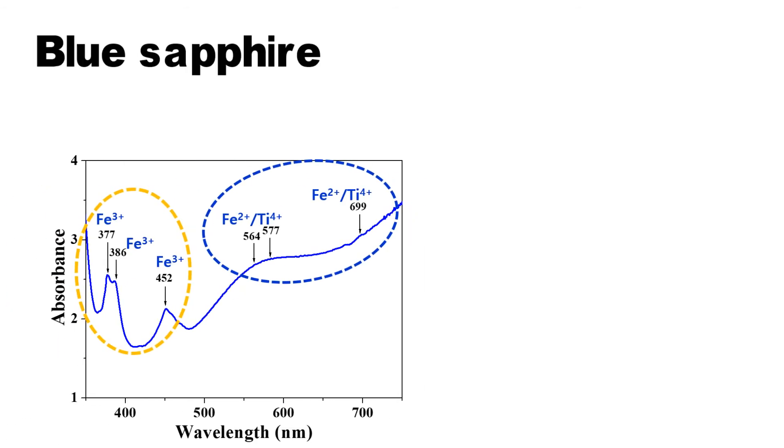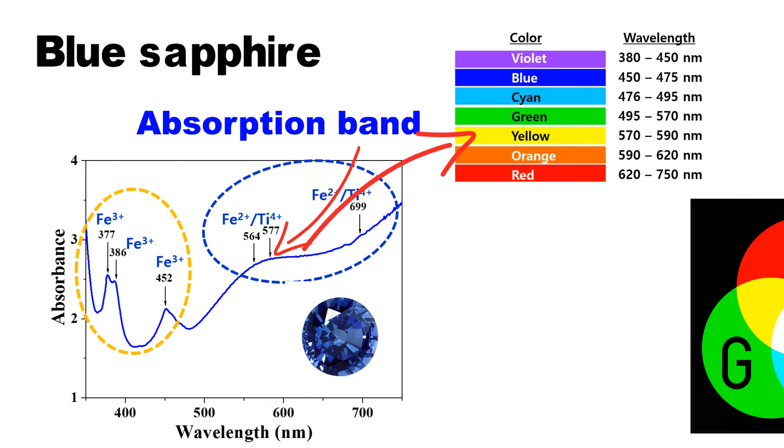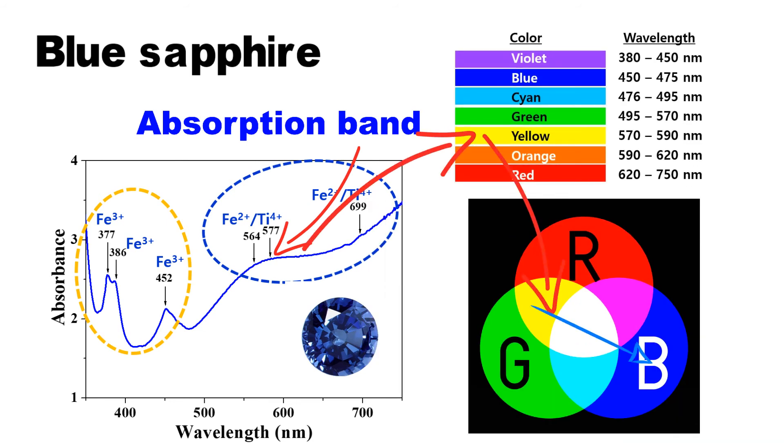As we look at the UV visible spectrum of blue sapphire, it shows absorption band near 580 nanometers. Therefore, as the complementary color, it will reflect the blue.